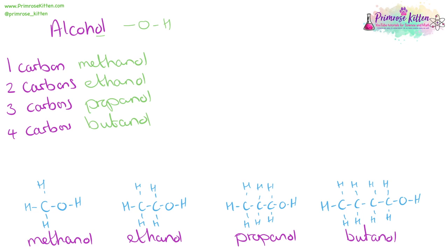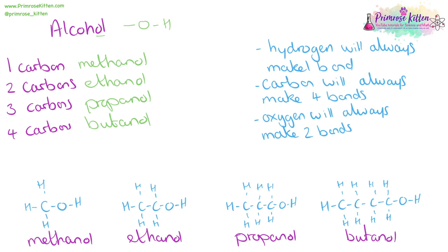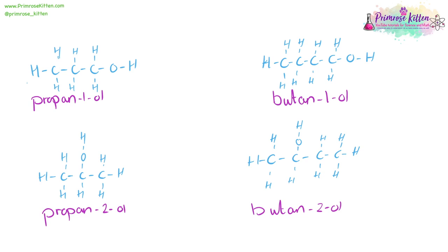When we draw our alcohols, we need to put our OH groups on here. And we need to remember and make sure everything has the right number of bonds. Hydrogen is only ever going to make one bond. Carbon makes four bonds and oxygen makes two bonds.